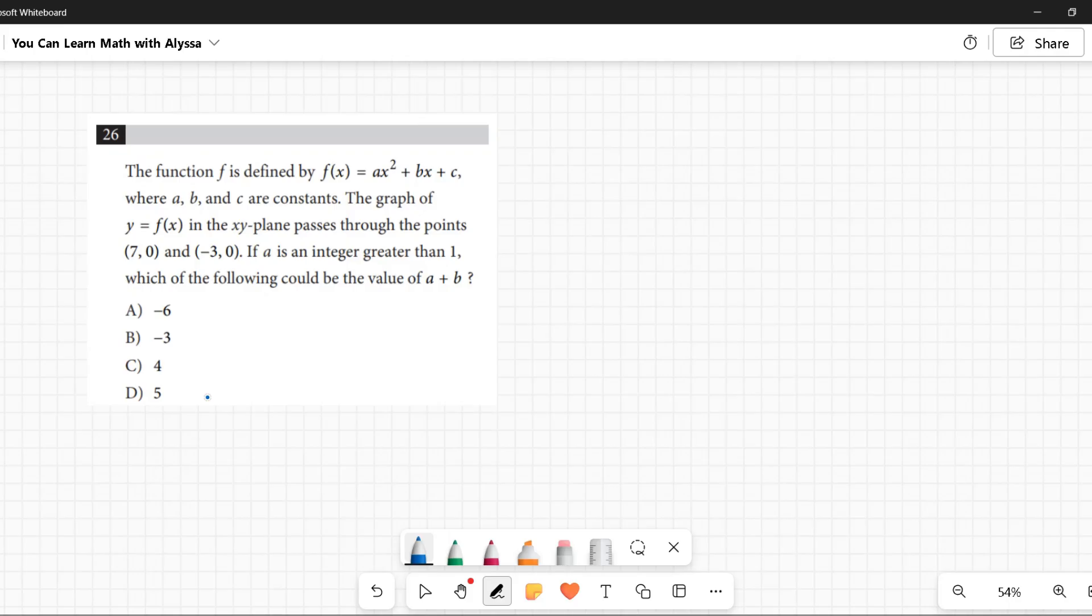Number 26. The function f is defined by f(x) = ax² + bx + c, where a, b, and c are constants. The graph of y = f(x) in the xy-plane passes through the points (7,0) and (-3,0). If a is an integer greater than 1, which of the following could be the value of a + b?